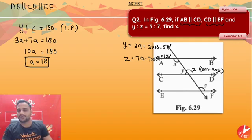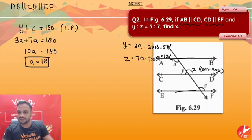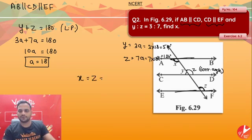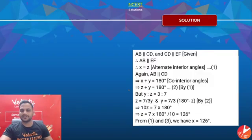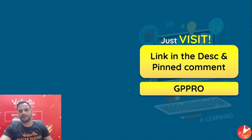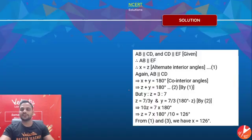Now I need to find the value of x. Since AB and EF are parallel to each other, angle x and angle z are a pair of interior alternate angles. So x is equal to z, which is equal to 126 degrees, because they are a pair of interior alternate angles. Therefore, the value of x is equal to 126 degrees.